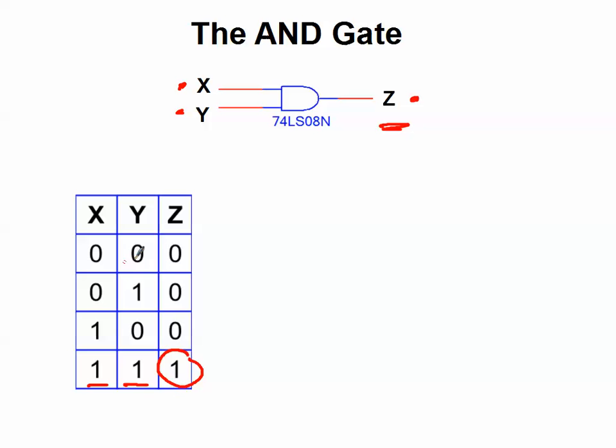If they're both 0, Z is 0. If X is 0 and Y is 1, Z is 0. If X is 1 and Y is 0, Z is 0. It's only true, the output is only true if both inputs are true. That's why they call it an AND gate.